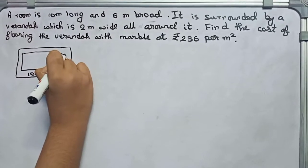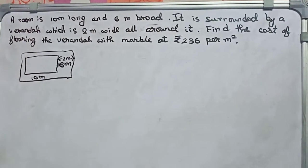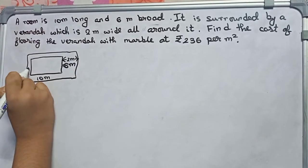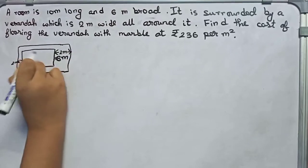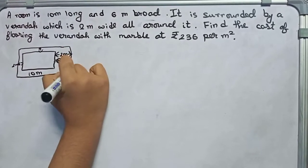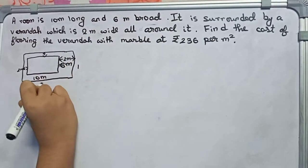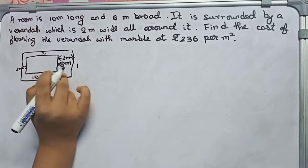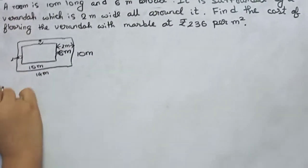It is 2 meter all around, so first we will find out the area including the veranda. The veranda is 2 meter on both sides, so the total length becomes 10 plus 2 plus 2, which is 14 meter. And in the breadth side, it is 6 meter, so if you add 4 to it, it becomes 10 meter.